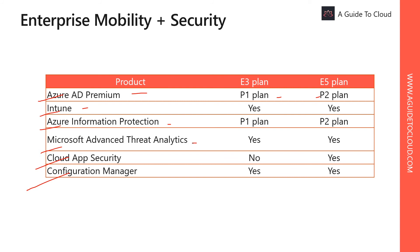This also reduces false positives. Cloud App Security uses data collected from your firewalls and proxy servers to identify cloud application usage. This can help identify unauthorized applications that might be a threat to your data, and additionally identify unusual usage patterns that can indicate a problem.